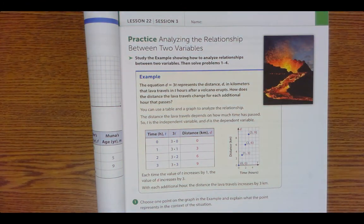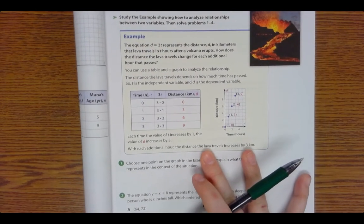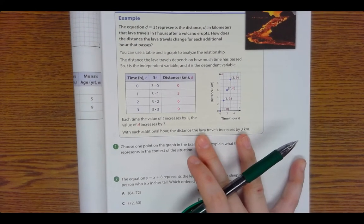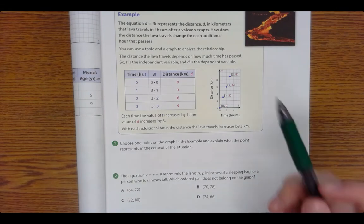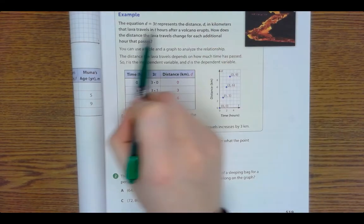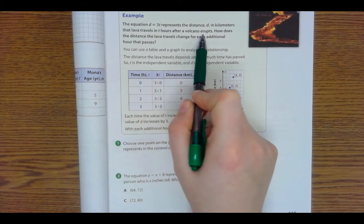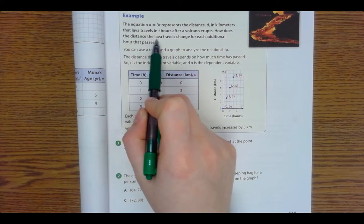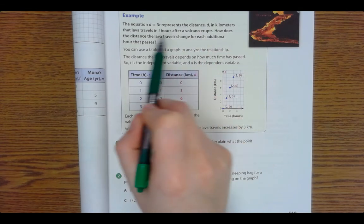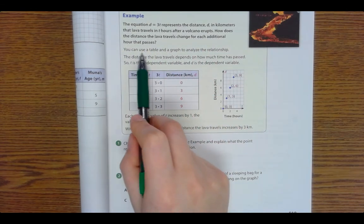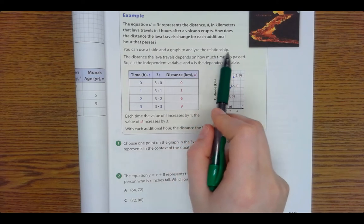So first let's start by looking at the example. The equation d equals 3t represents the distance in kilometers that lava travels in t amount of hours after a volcano erupts. How does the distance the lava travels change for each additional hour that passes? You can use a table and a graph to analyze the relationship.